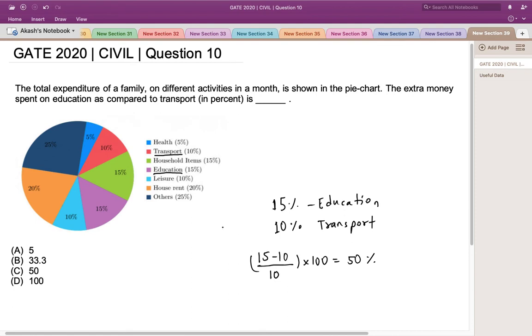If we try to look at these figures in terms of numbers, suppose that the family has—if you take the number as 100, then a total of 15 units is spent on education and 10 units is spent on transport. If we compare these two numbers, we can see that there is a rise of 5 units.